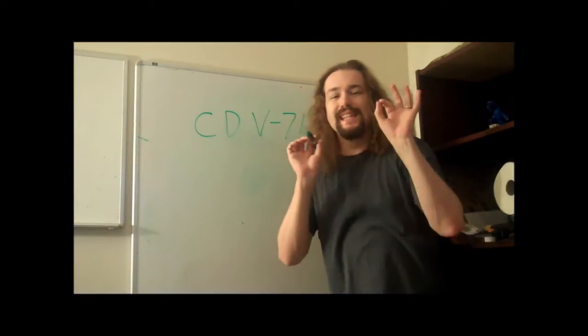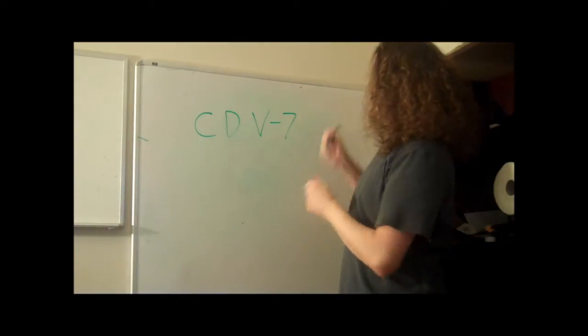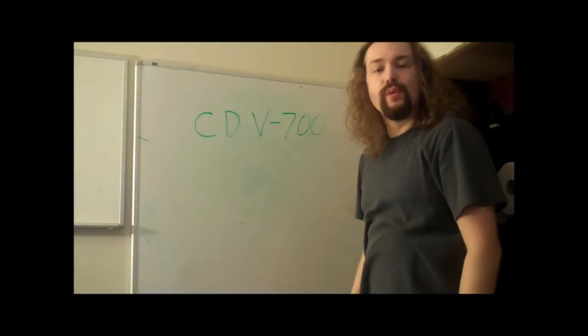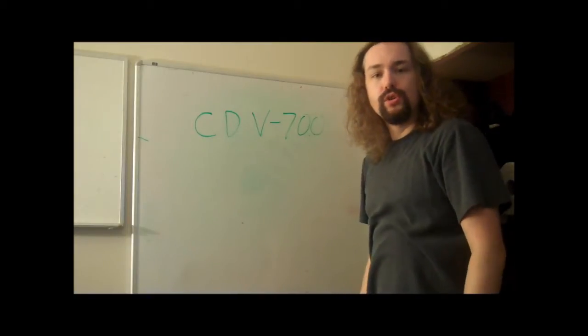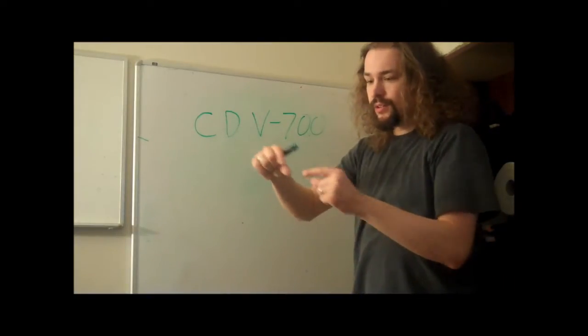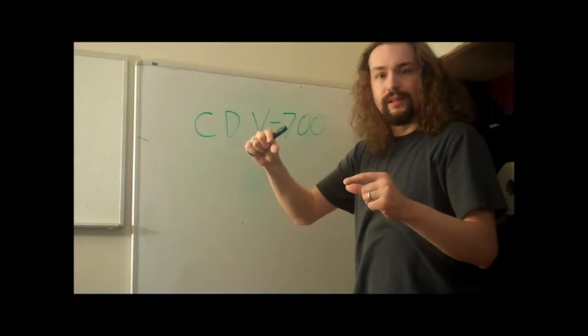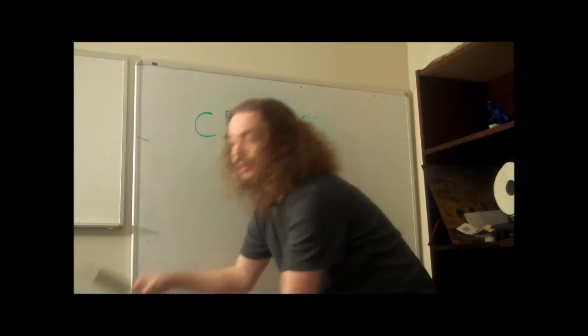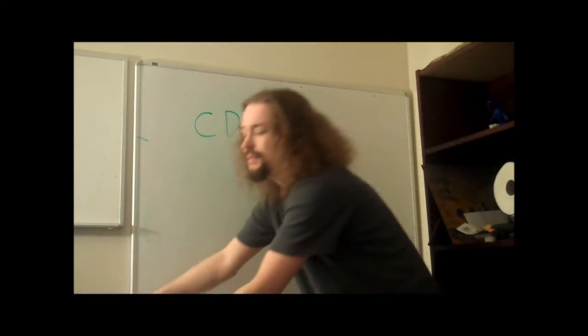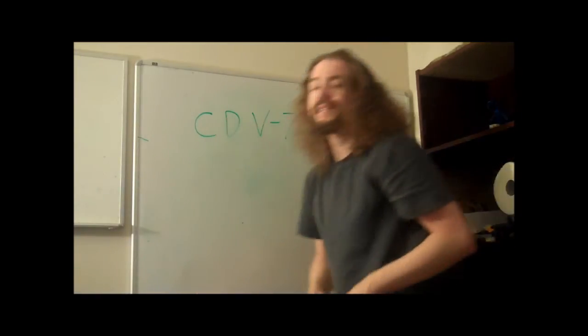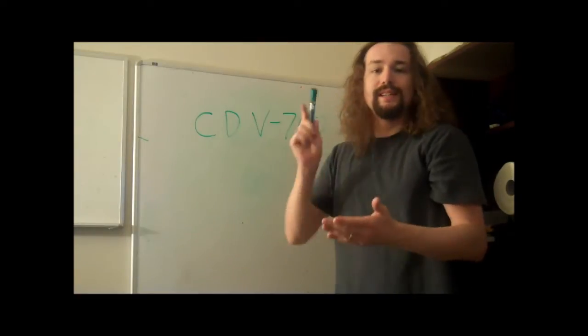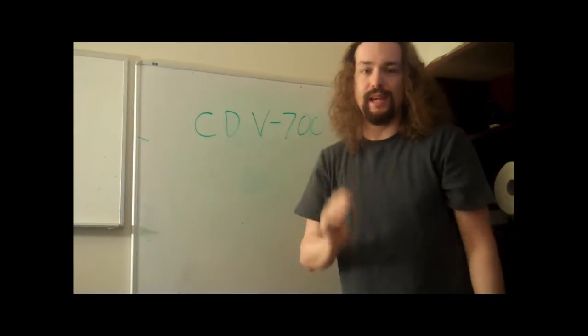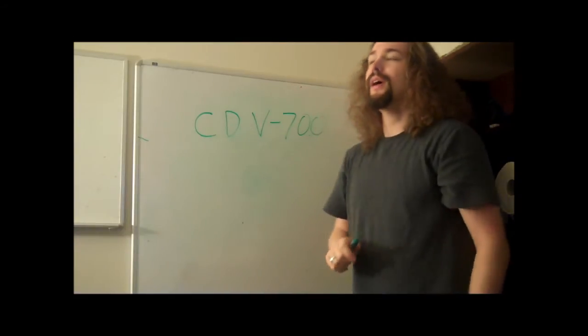The CDV 700 is a Geiger counter with a Geiger-Mueller tube. It is a little cylindrical tube that detects radiation. It's similar to the way that this unit here works, except that it has a wide pancake tube. It's the exact same technology. The CDV 700 is a Geiger counter. It can detect radiation, and it can detect low-level radiation. That's the important part, low-level.